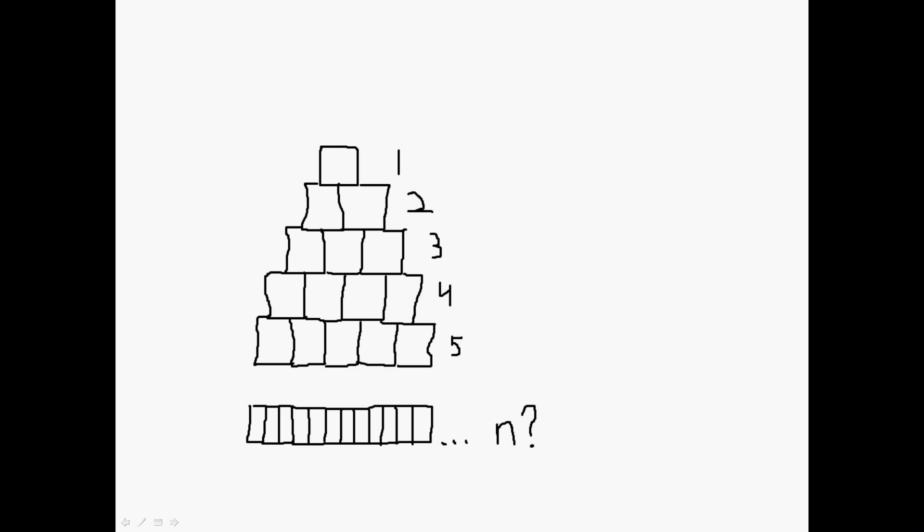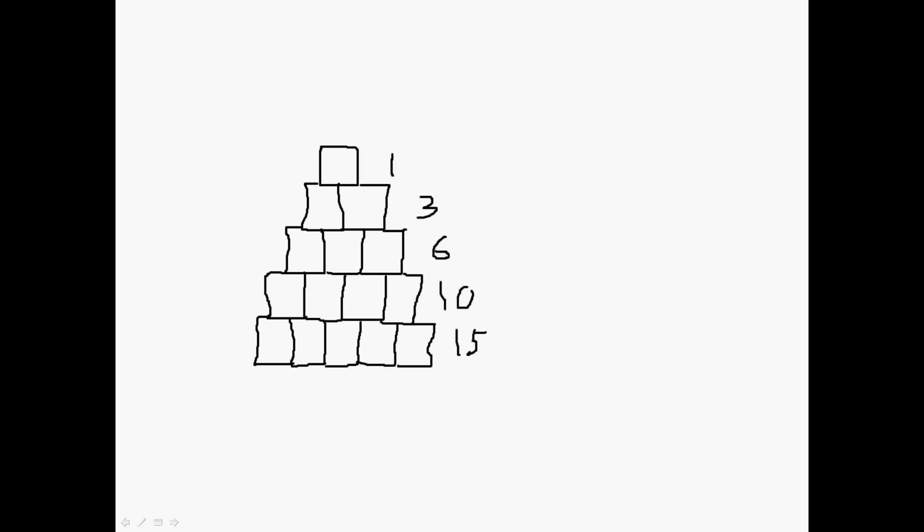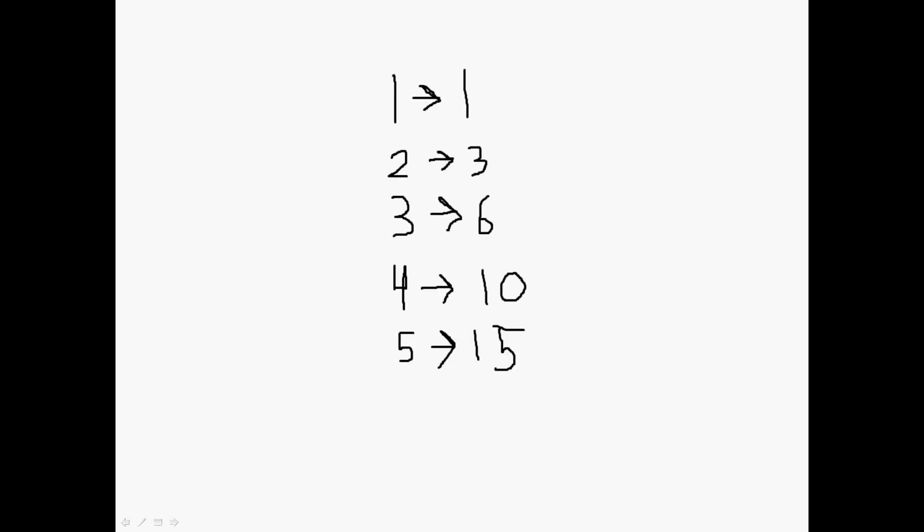But what happens when you have n blocks at the bottom row? Let's start looking at the pattern. As I mentioned before, you have one, then three, six, ten, fifteen. On the first row — this is just a different illustration of that — one becomes one, two becomes three, three becomes six, four becomes ten, and five becomes fifteen. Kind of like a function.